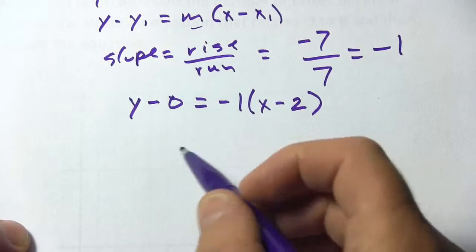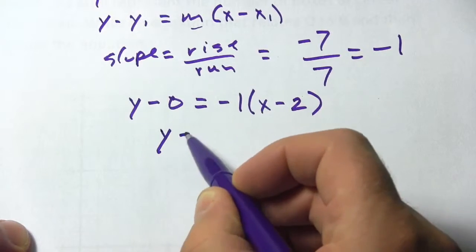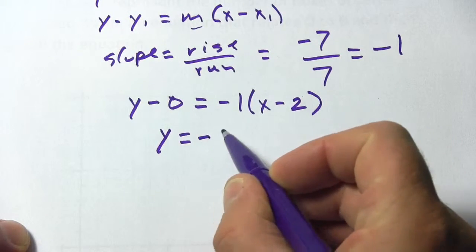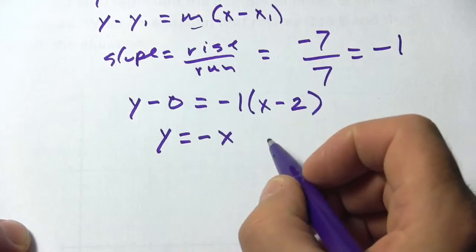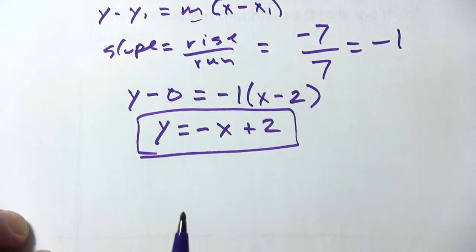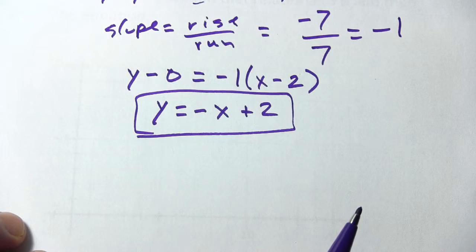And we just need to do a little simplifying here. y minus 0 is just y. And we'll distribute the 1. We get negative 1 times x, that's negative x. And negative 1 times negative 2 is a positive 2. So our equation is y equals negative x plus 2.